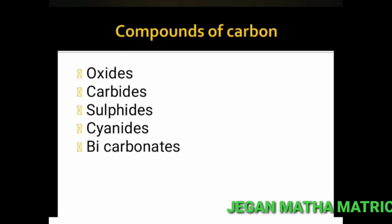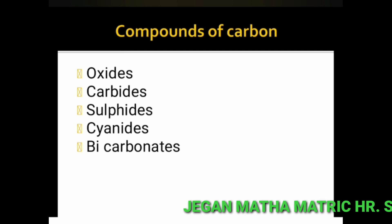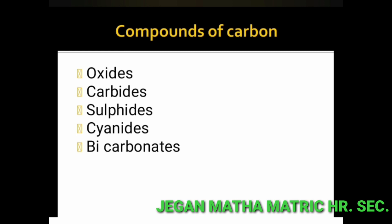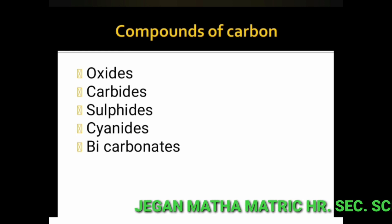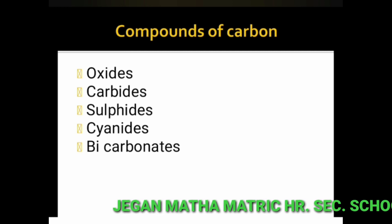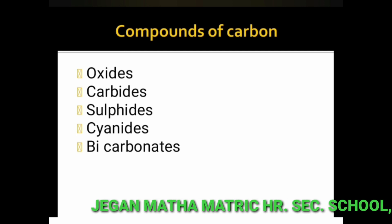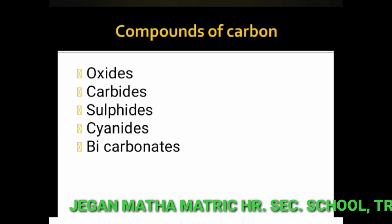Special features of carbon: the number of carbon compounds known at present is more than 5 million. Many newer carbon compounds are being isolated or prepared every day. Even though the abundance of carbon is less, the number of carbon compounds alone is more than the number of compounds of all the elements taken together.